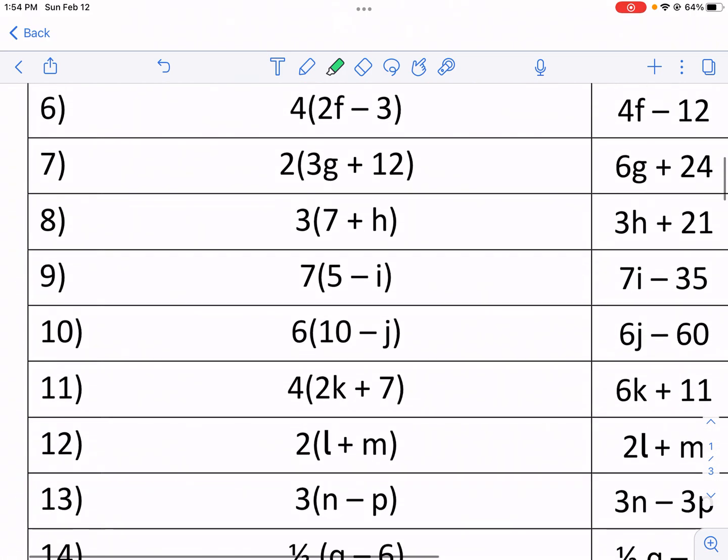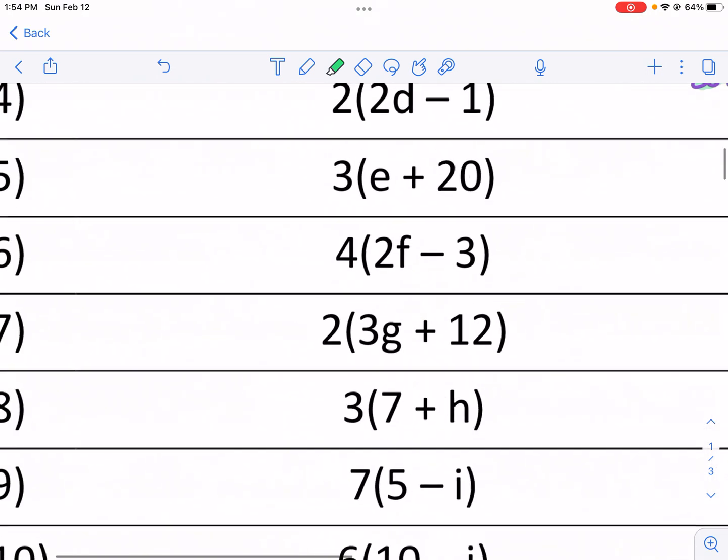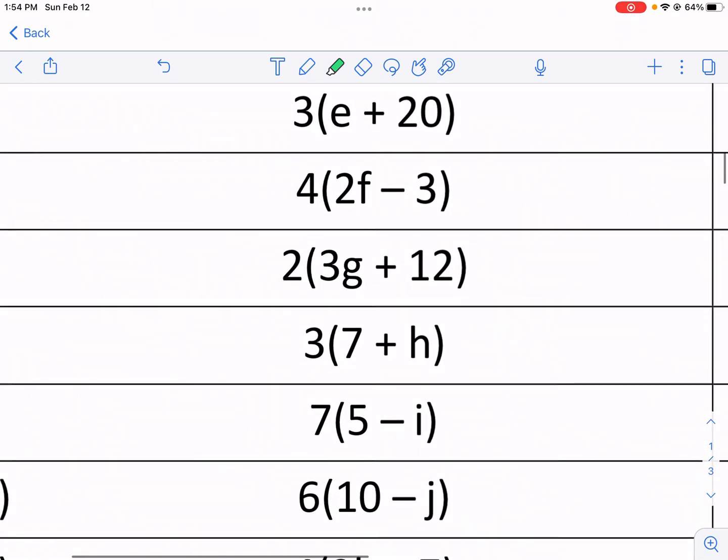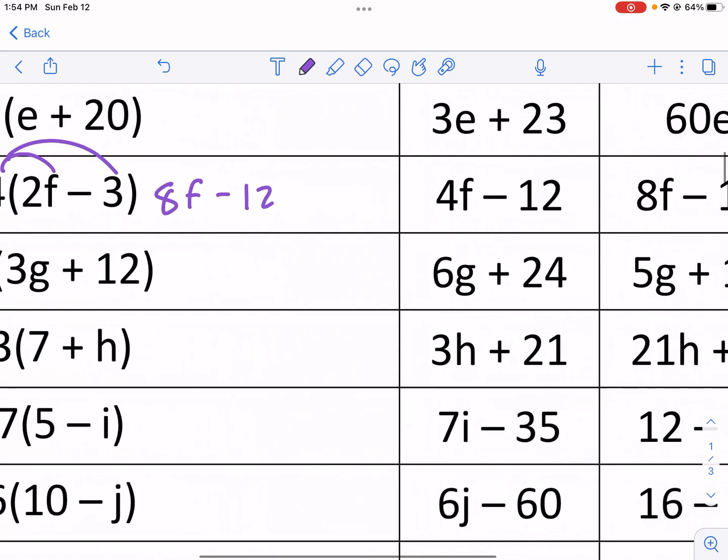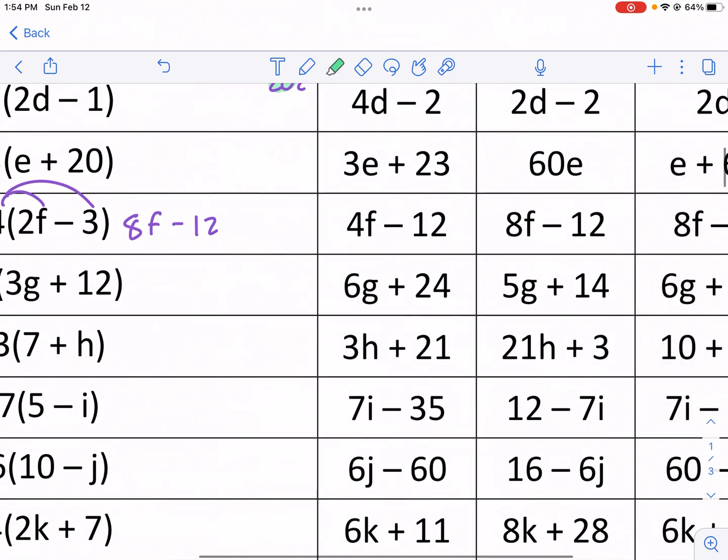Let's jump to number 6, and then we'll hit a couple more. So number 6 is this one. We're going to use the distributive property. We have 4 times 2F. That gives me 8F. I'm going to keep the minus sign the same. 4 times 3, that is 12. 8F minus 12 is my answer. So it's the letter B for this one.